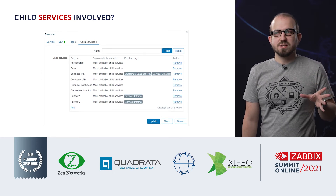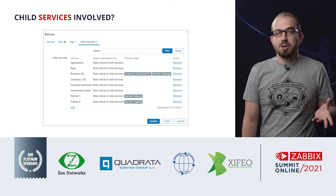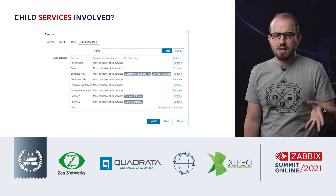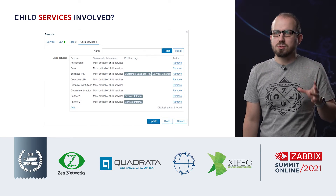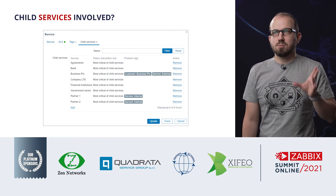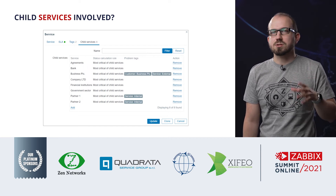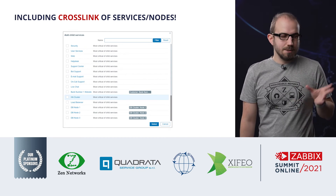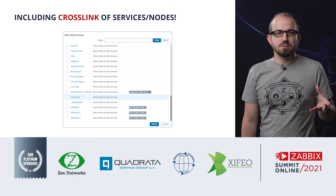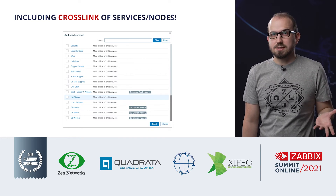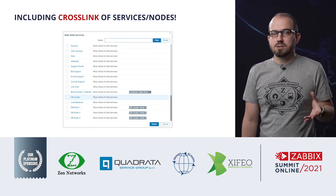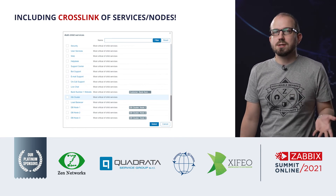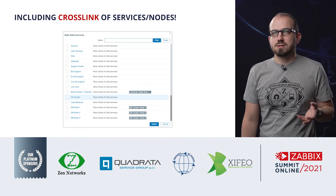Plus the child services — you don't actually have to go somewhere else and specify a separate child service for each service. You can do that from the same configuration tab, just select what child services should be added to the parent service. And even more, you can actually cross-link them, meaning that child services can be children for multiple parents. That's completely okay, so you won't need to recreate a child service for each parent service. Just cross-link them and they will be related to multiple parent services at the same time.